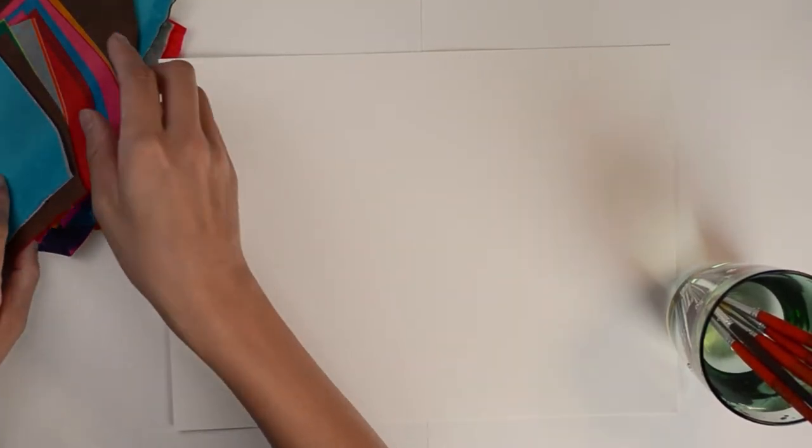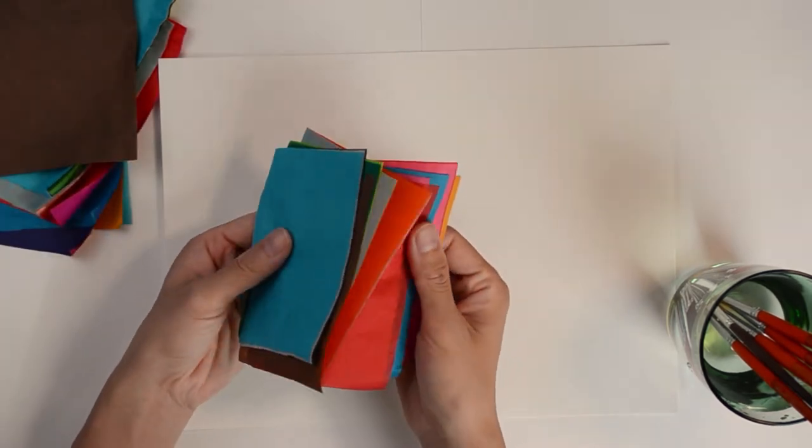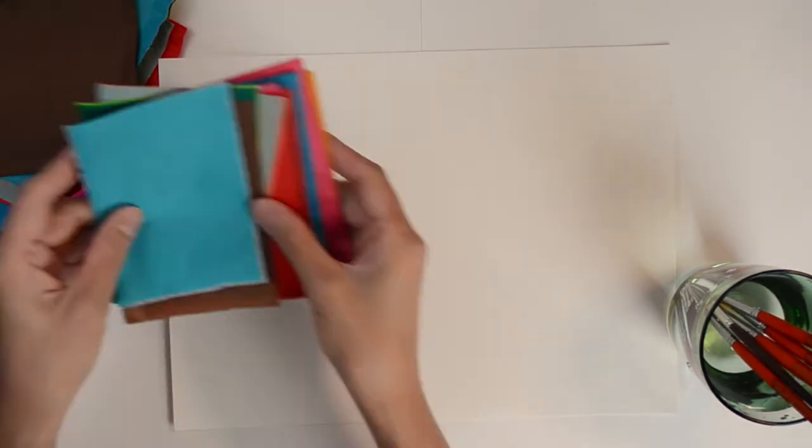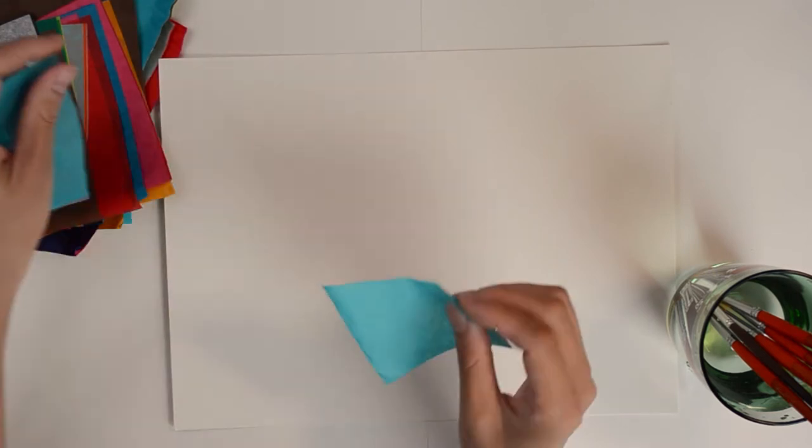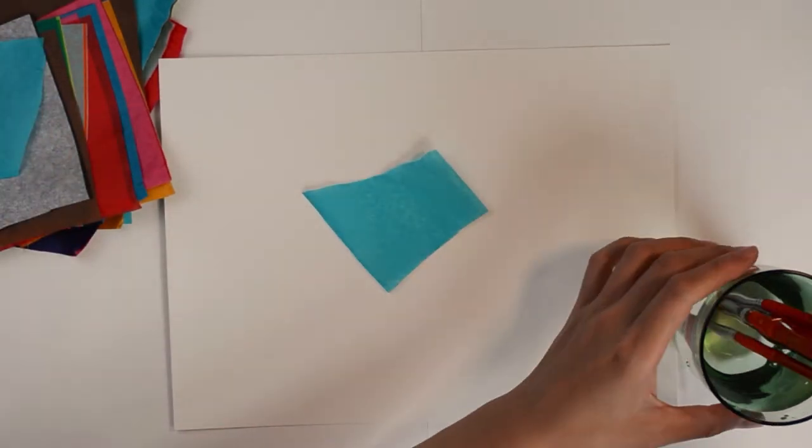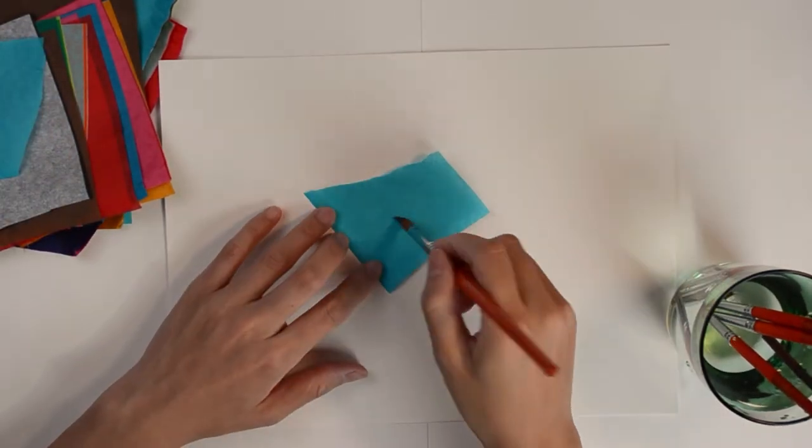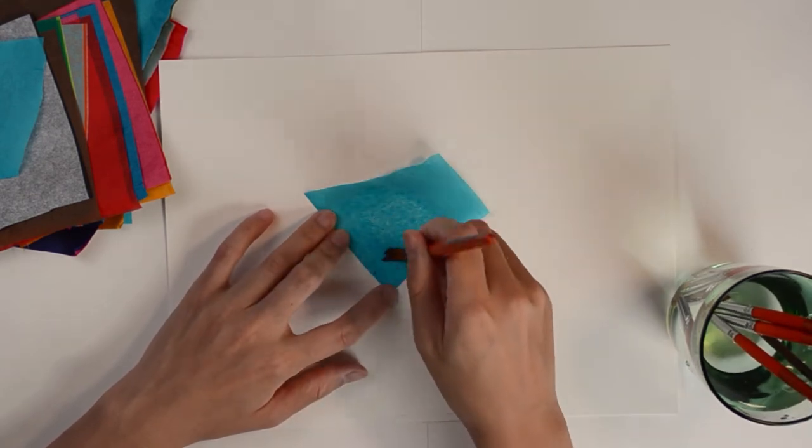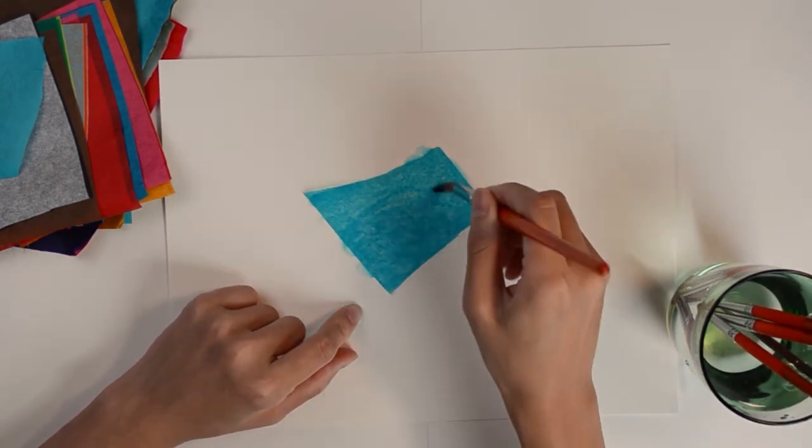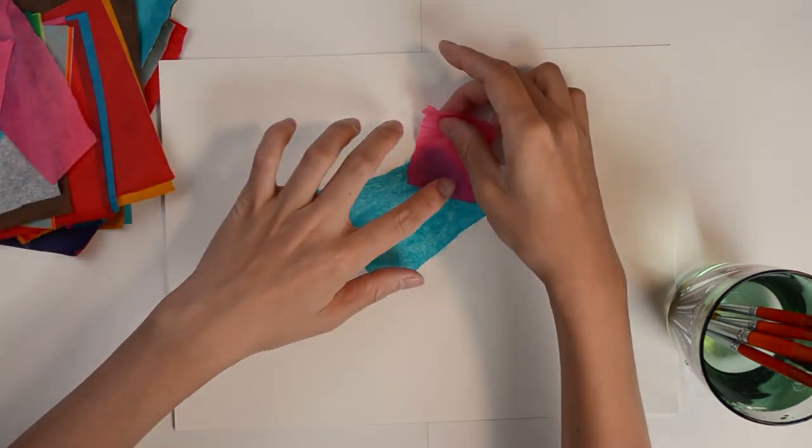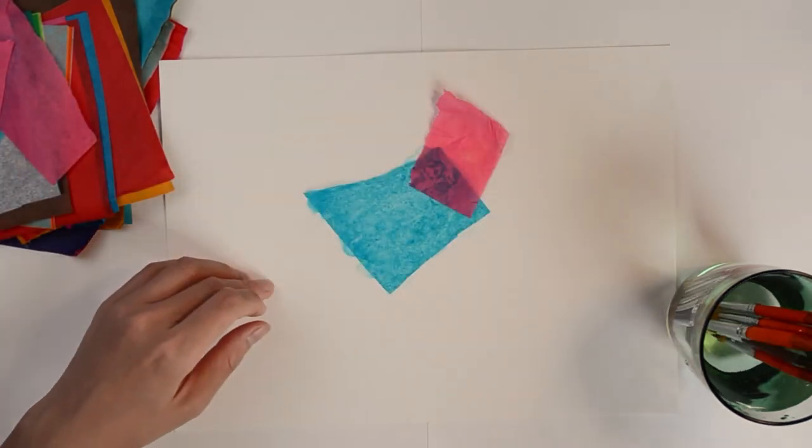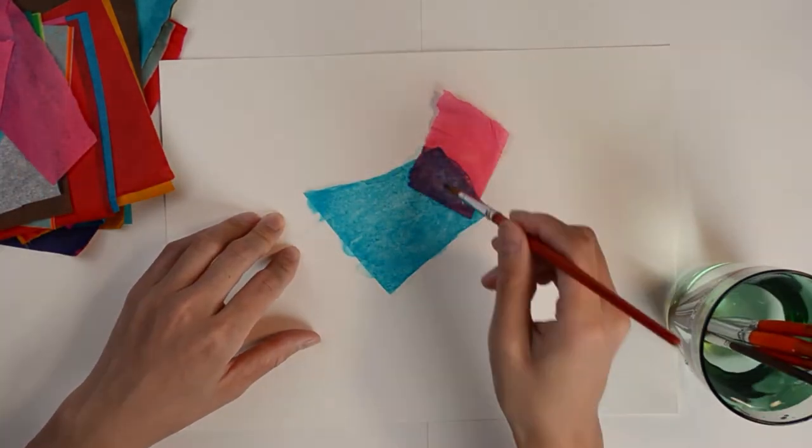Today we are using watercolor paper and bleeding tissue paper. You may demonstrate how to use it and have children practice. Cut or tear a piece of tissue paper and put it on the watercolor paper, and then paint over it with a clean brush and water. You can put two or more colored tissue papers close and you will see the interacting effects of different colors.